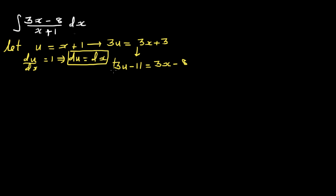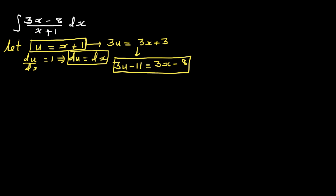So I have done three substitutions: in place of x plus 1 (the denominator) I put u, in place of the numerator 3x minus 8 I put 3u minus 11, and in place of dx I put du. So the whole integral changes to the integration of (3u minus 11) over u, du.